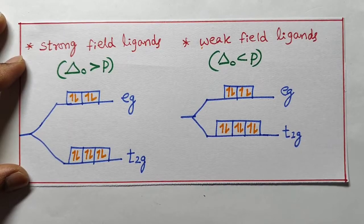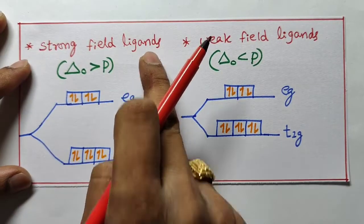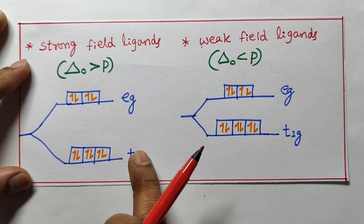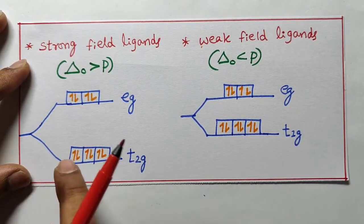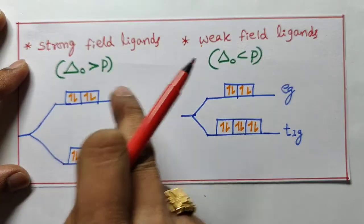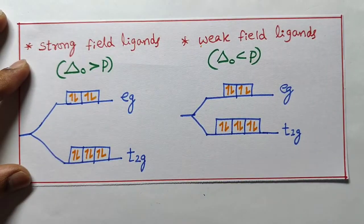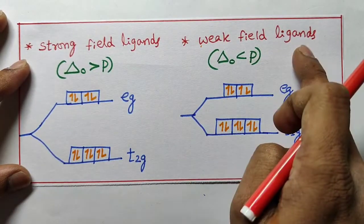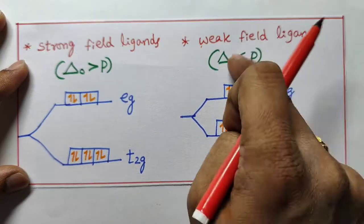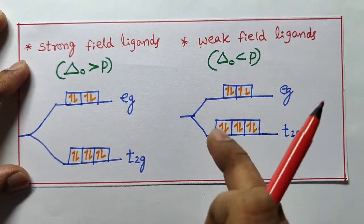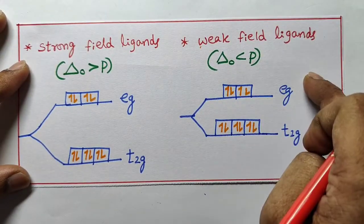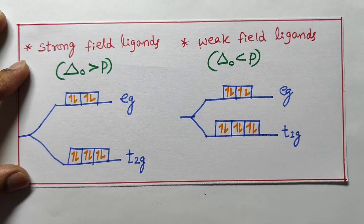Once again I will repeat. In presence of strong field ligands, first t2g is completely filled: 1, 2, 3, 4, 5, 6 — then 7, 8, 9, 10 go to eg. For weak field ligands: 1, 2, 3 fill t2g, then 4, 5 go to eg, then 6, 7, 8 pair into t2g, then 9, 10 fill eg. This is how you fill.